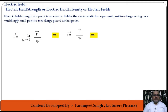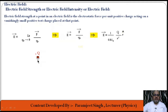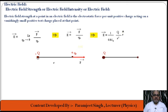Electric field E equals force divided by q naught. We also have the formula: E equals (1 / 4πε₀) × (Q / r²). Here the source charge +Q is placed at some distance from the point where test charge +q naught is placed, experiencing a force of repulsion from left to right. The distance r is between capital Q and small q naught.